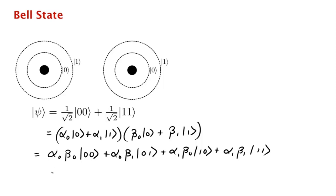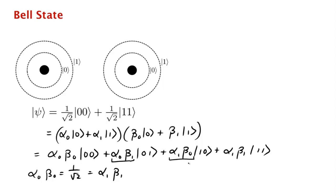By comparing coefficients, we see that alpha_0 beta_0 = 1/√2 and alpha_1 beta_1 = 1/√2. The fact that alpha_0 times beta_0 is non-zero means both alpha_0 and beta_0 must be non-zero, and similarly both alpha_1 and beta_1 must be non-zero — all four numbers must be non-zero. But we also need alpha_0 beta_1 = 0 and alpha_1 beta_0 = 0, requiring either alpha_0 or beta_1 to be zero, and either alpha_1 or beta_0 to be zero. This is a contradiction, so there is no way to factor this state.